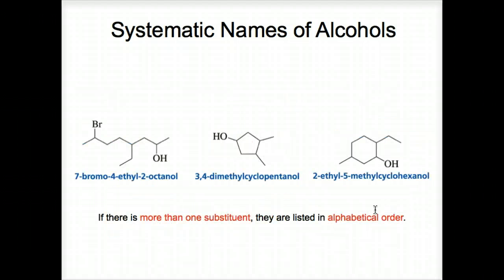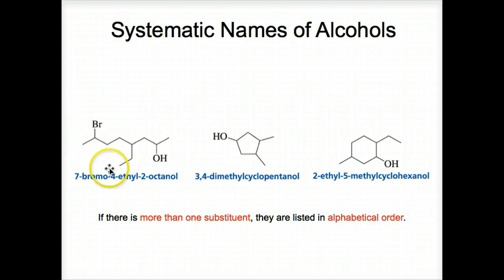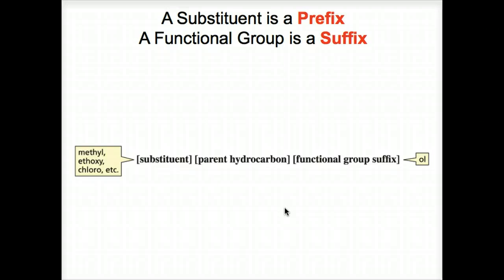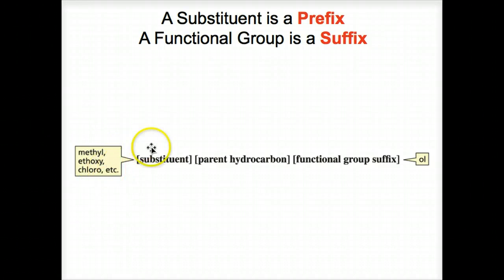Using systematic naming for alcohols: if there is more than one substituent, they are listed in alphabetical order. For example, bromo comes before ethyl alphabetically and gets the lowest number. We number an eight-carbon chain — 2-octanol — the ethyl group is on number four and the bromine is on number seven, giving the full name. A substituent is a prefix; a functional group like OH is a suffix. Methyl, ethoxy — these are substituents (prefixes). Alcohols — OH — are suffixes. That's a general rule.